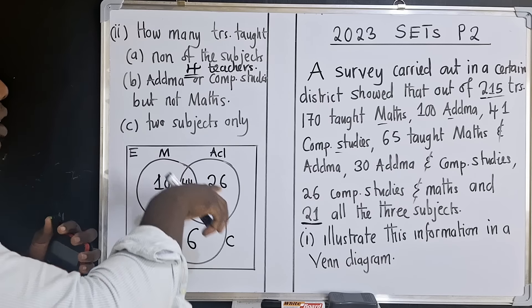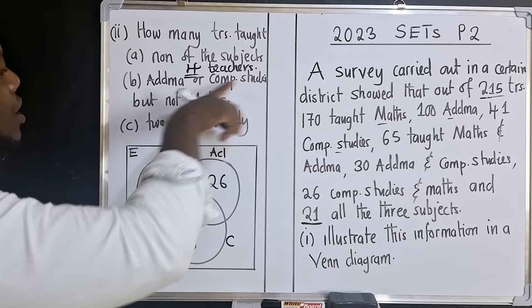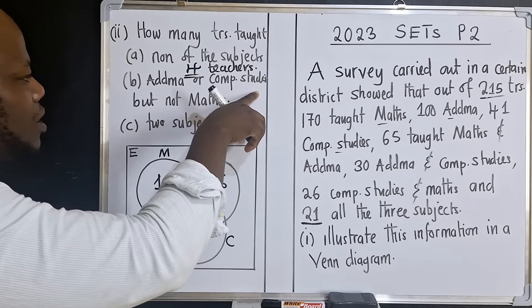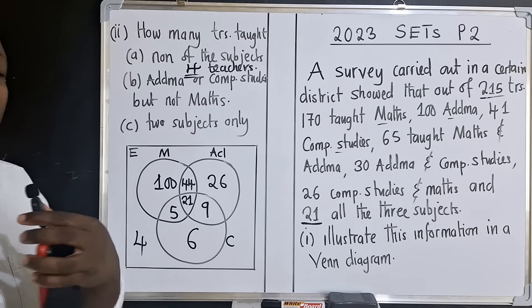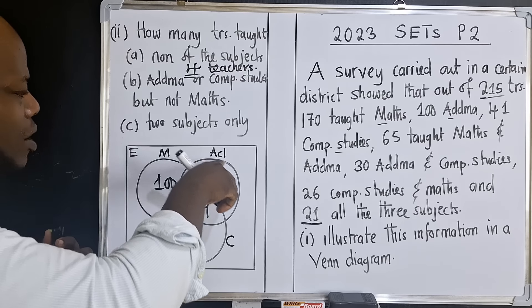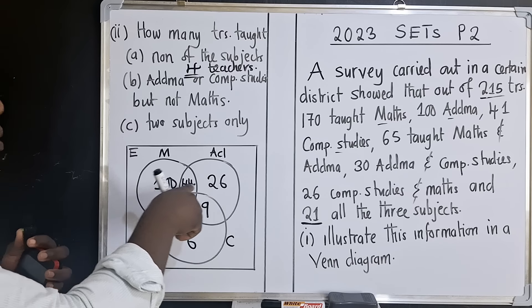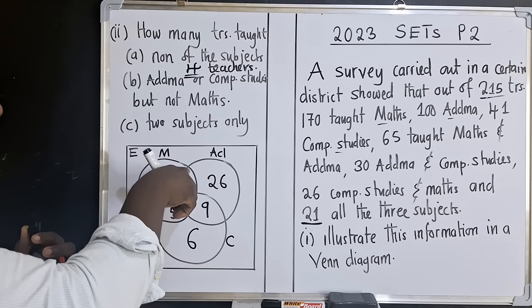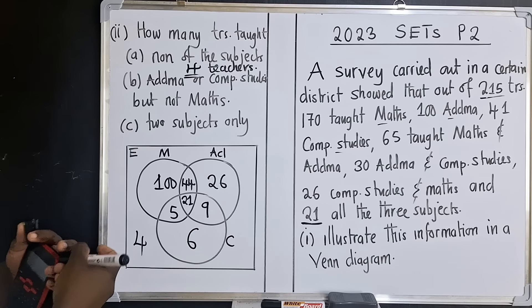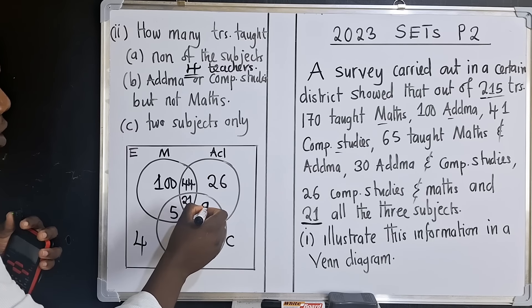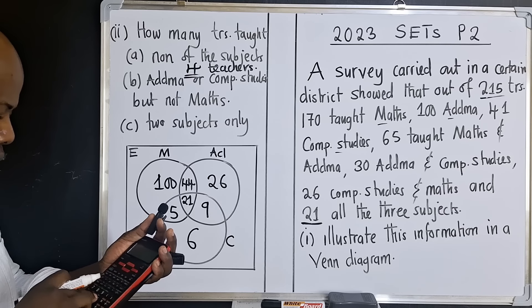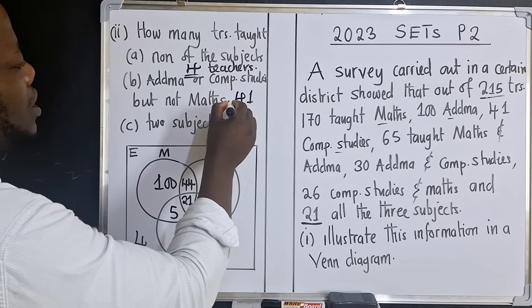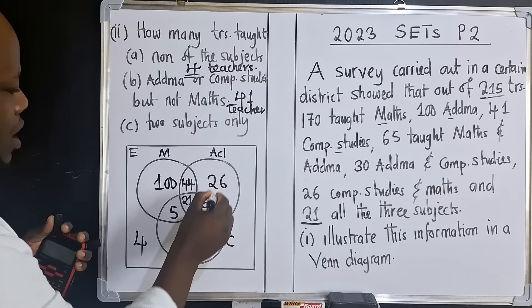Part B asks: how many teachers taught Additional Mathematics or Computer Studies but not Mathematics? This means we take the union of Additional Mathematics and Computer Studies, excluding everything overlapping with Mathematics. We add only the regions outside the Mathematics circle: 26 plus 9 plus 6, which gives us 41 teachers.